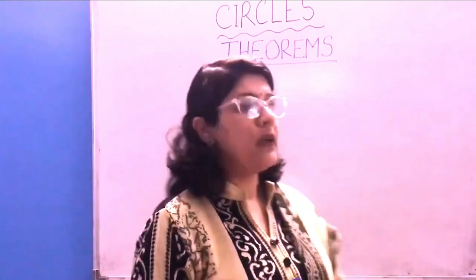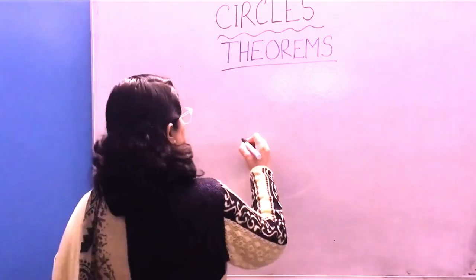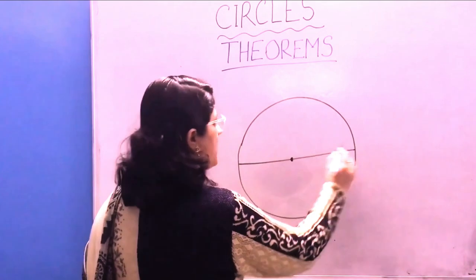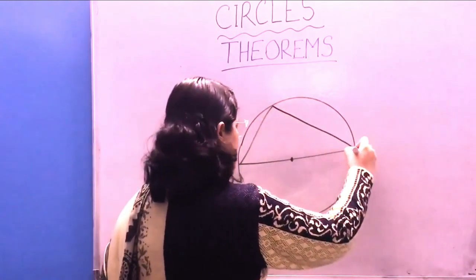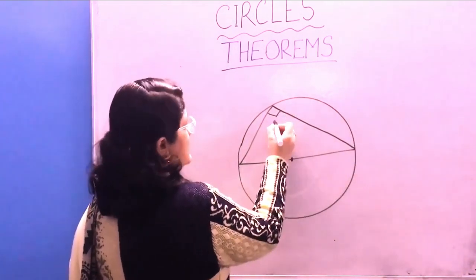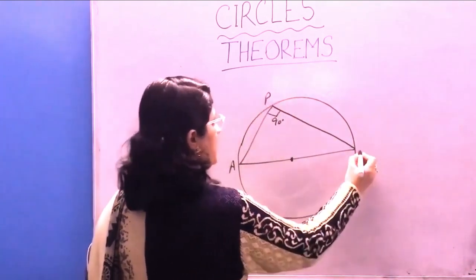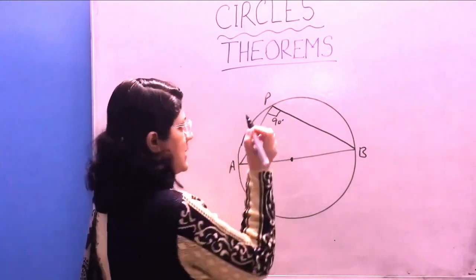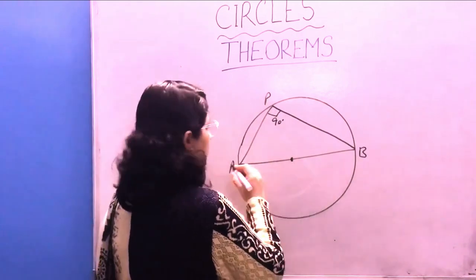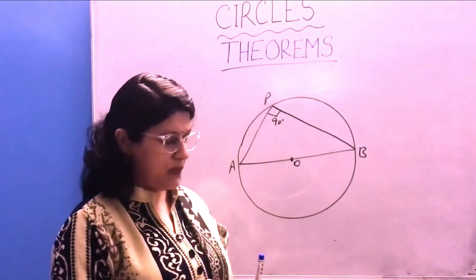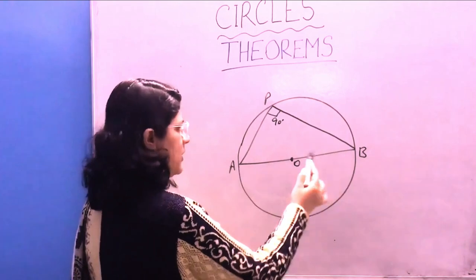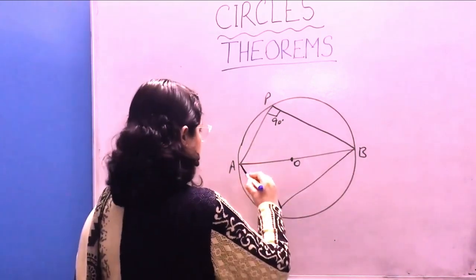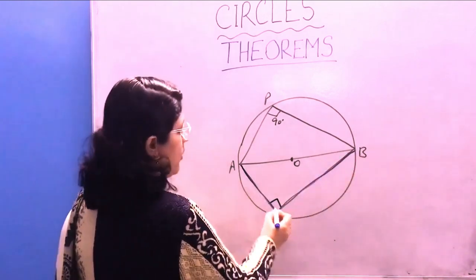The next theorem is: the angle in a semicircle is a right angle. To draw a semicircle, we draw a diameter passing through the center. The angle made by the diameter on any point of the circumference should be 90 degrees. So angle APB is 90 degrees. Always ensure before using this that it is given that AOB is the diameter, or that O is the center and the line passes through it. Then we can be sure that the angle made by the diameter at any remaining part of the circumference is 90 degrees.